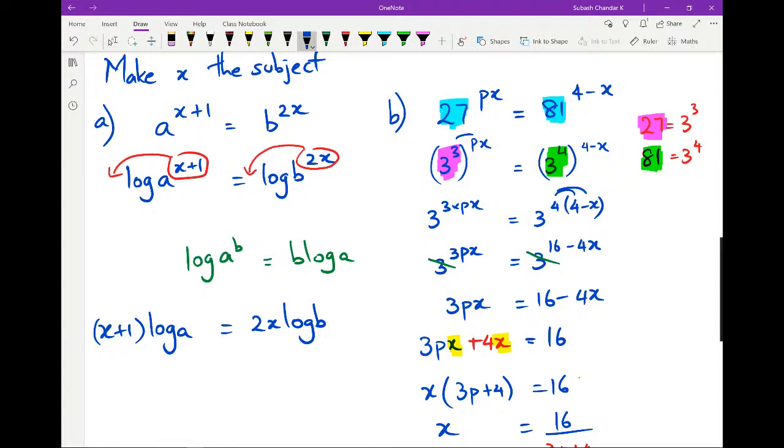Now the next step is, we are still trying to make x the subject, so we've actually got to figure out a way to expand this bracket here, which is x plus 1. So if you think about it, we just use our normal expanding rules. So x times log A and 1 times log A. So x times log A is going to be x log A, and then 1 times log A is going to be 1 log A. And all of this is equal to 2x log B.